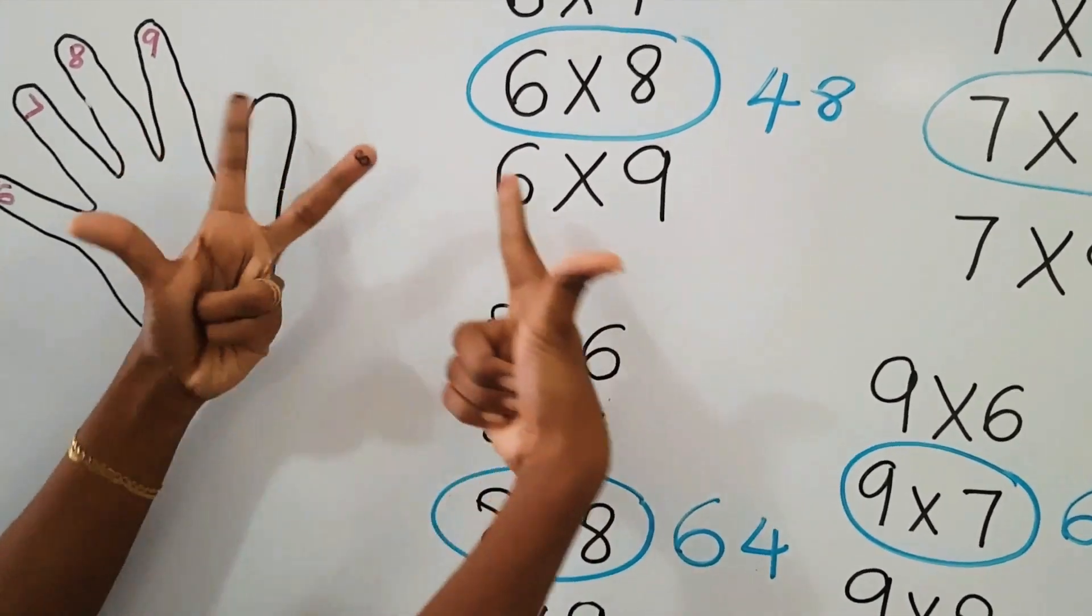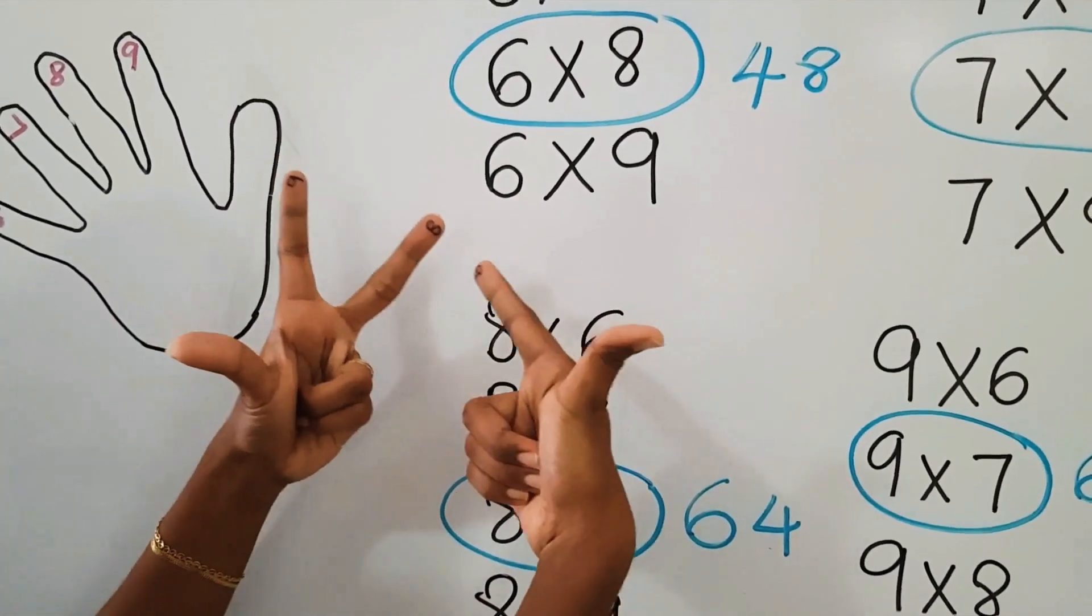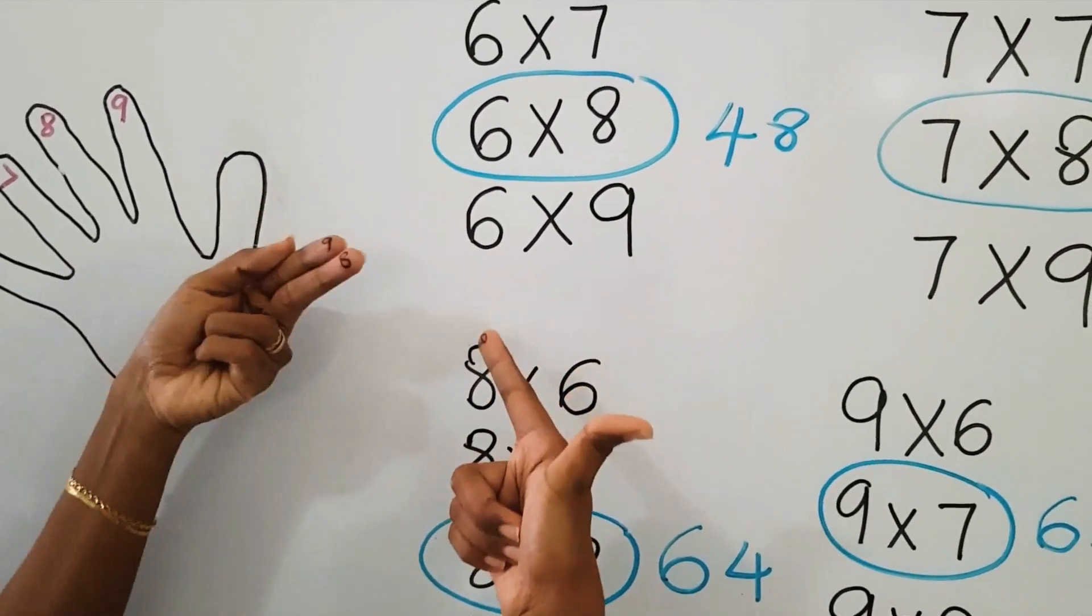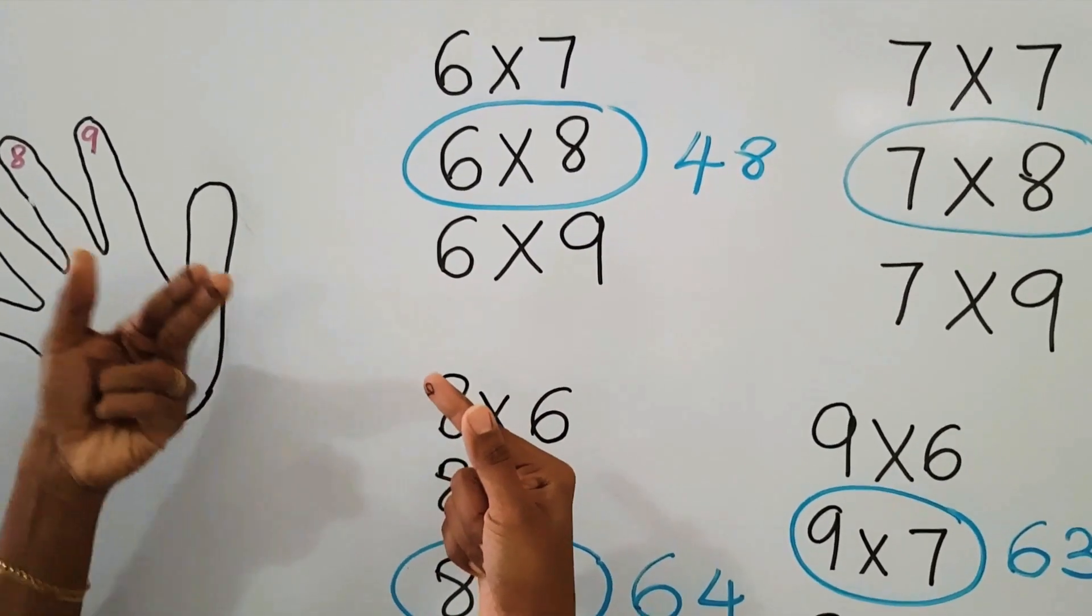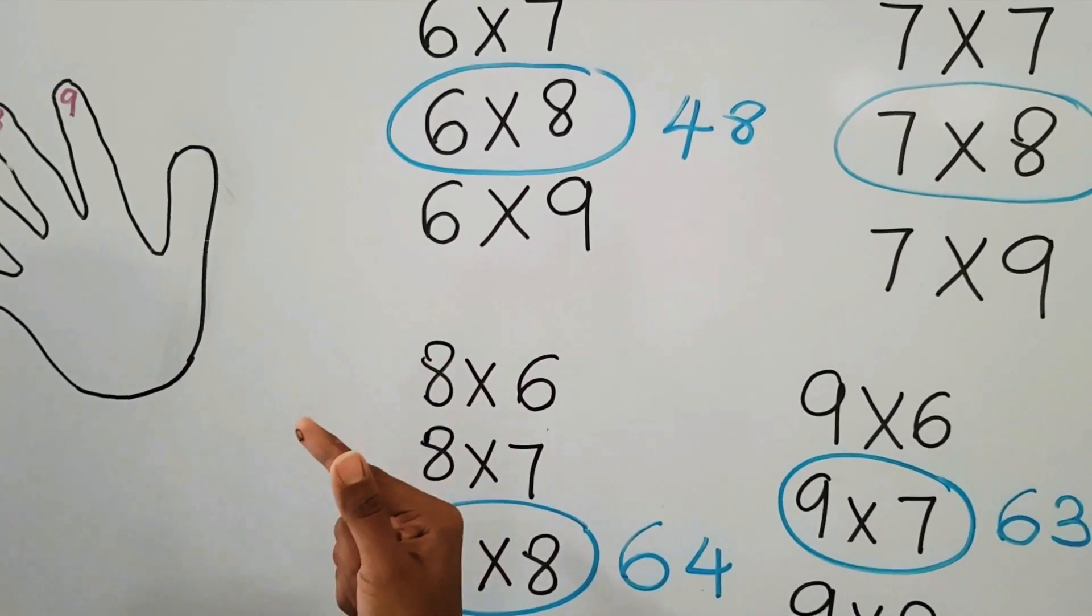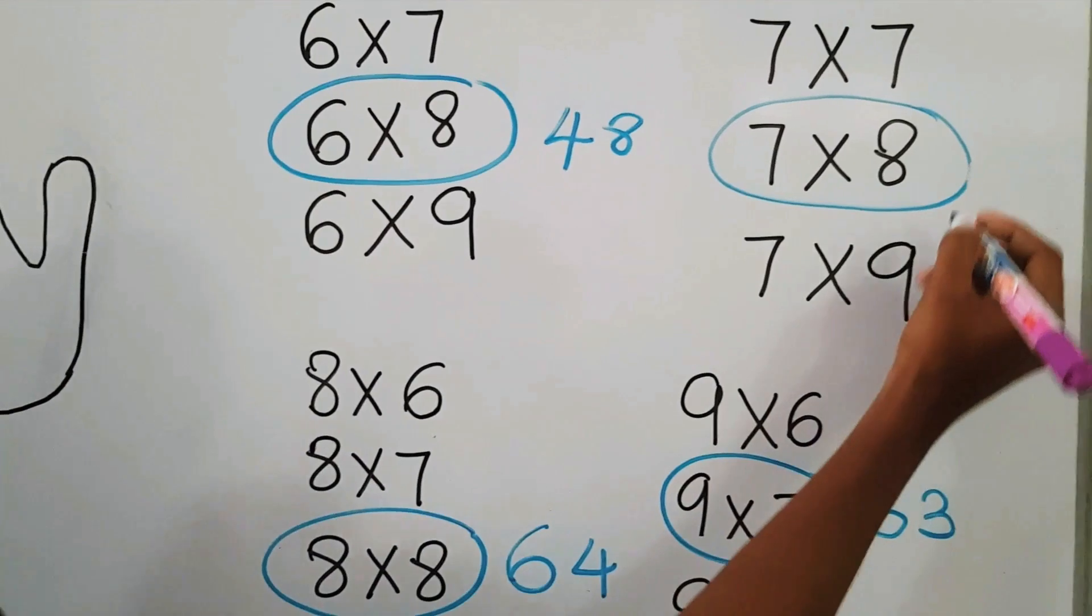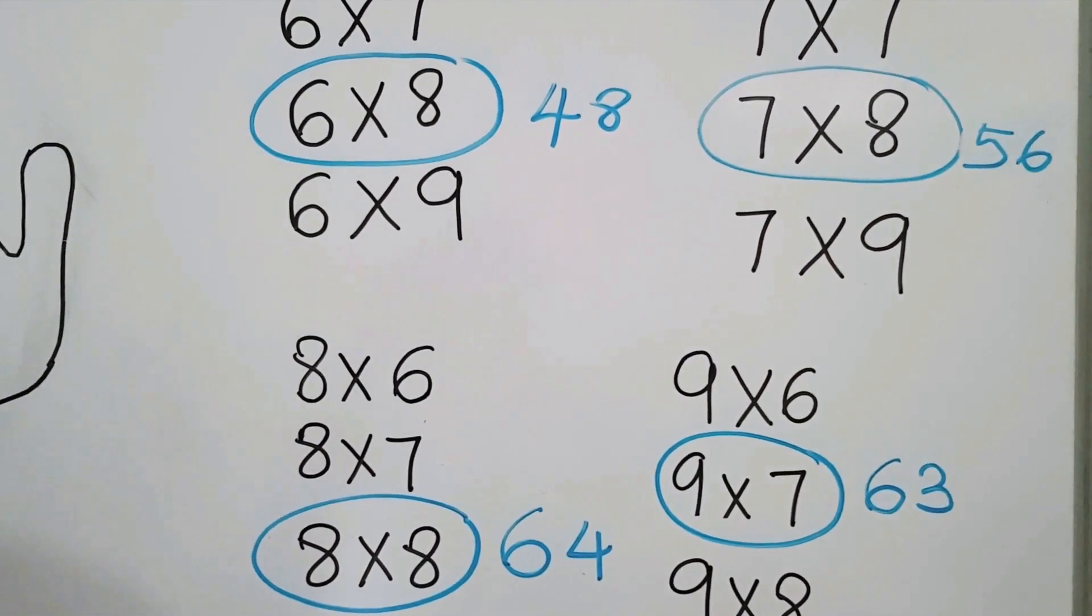When we are folding, we have folded 5 fingers which means 50. So 3 from one hand, 2 from the other hand which is the balance. So 3×2 will give us 6. 50 plus 6 will give us how much? 56. There you are.